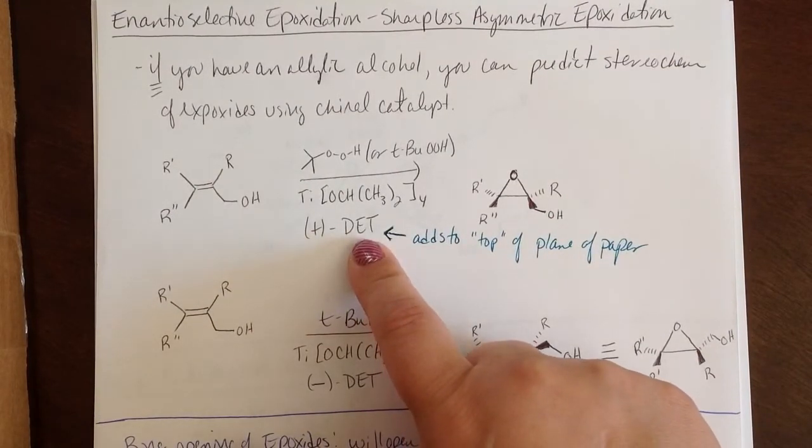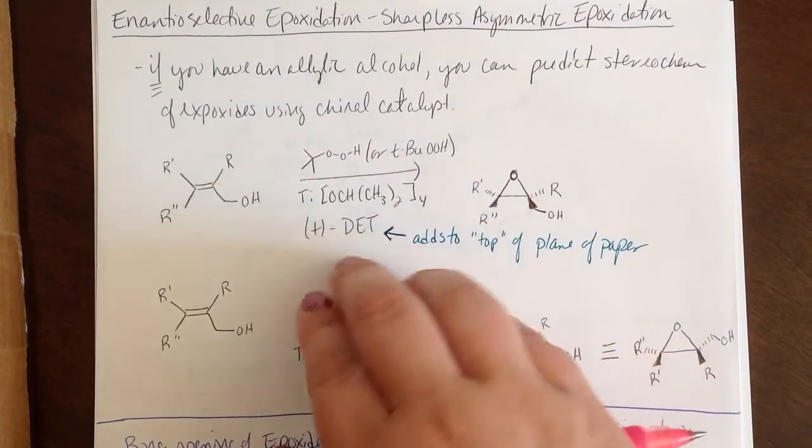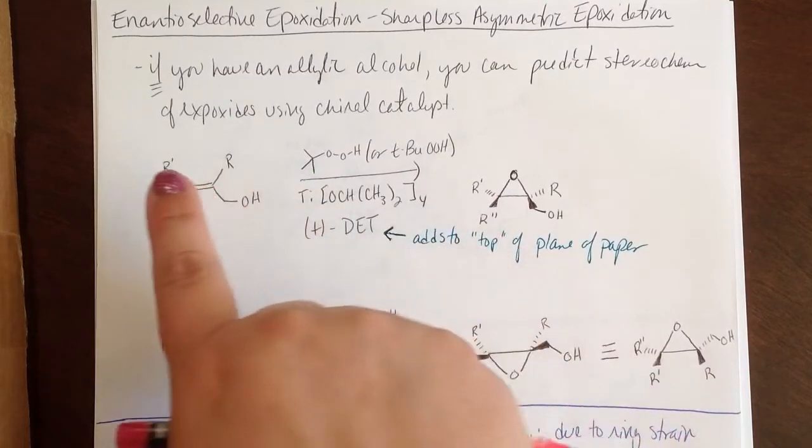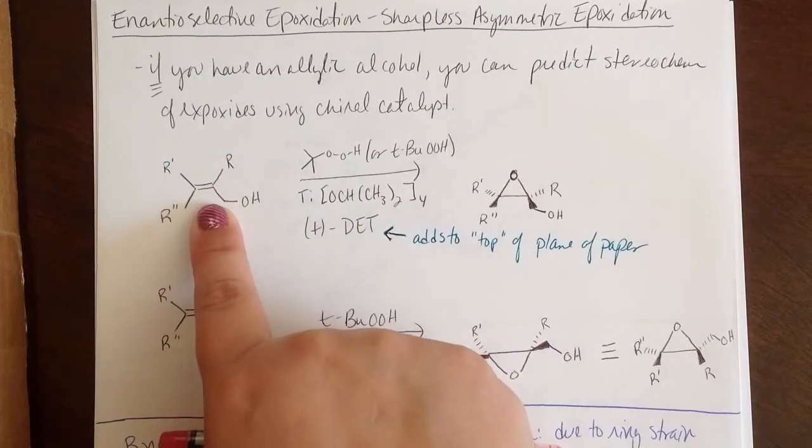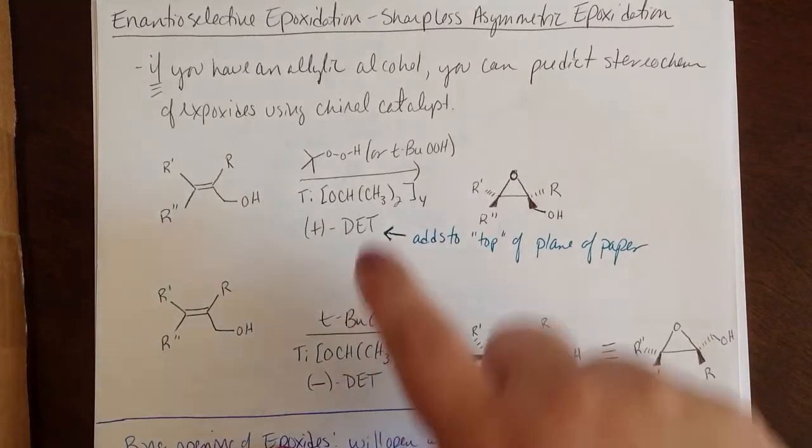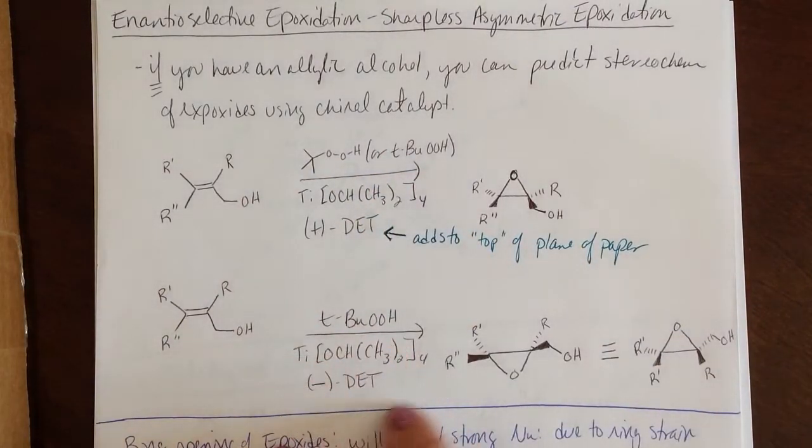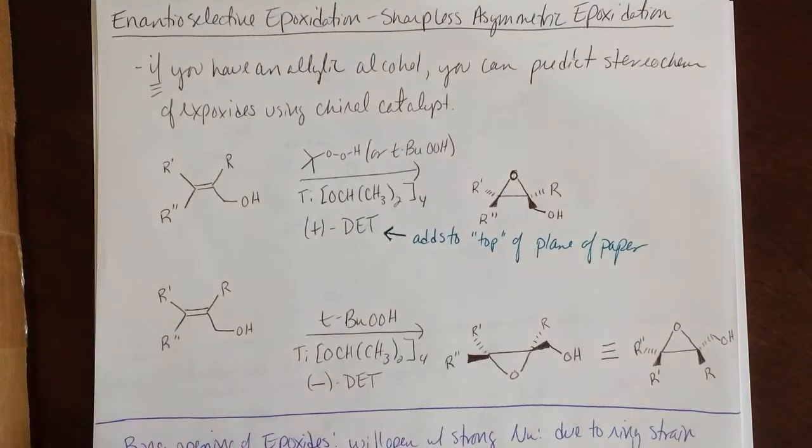What this does as a chiral catalyst system allows you to add the oxygen to the top of the plane of this paper. So if you've got this double bond in the plane of the paper, you're basically plopping down the oxygen right on top of it. In comparison, we can change the chirality of this type of additive, which is really kind of more like a ligand, and put the oxygen underneath the plane of this paper.